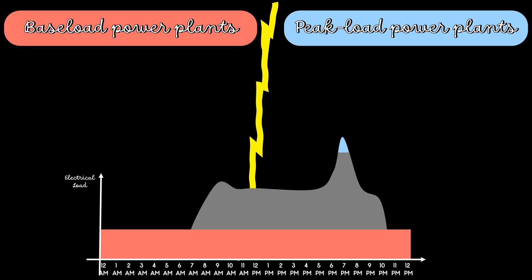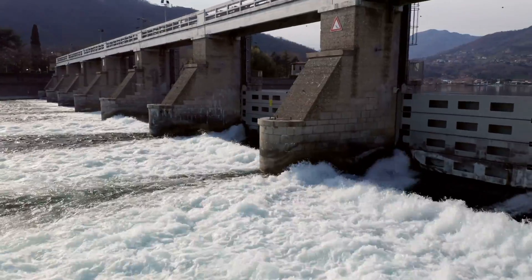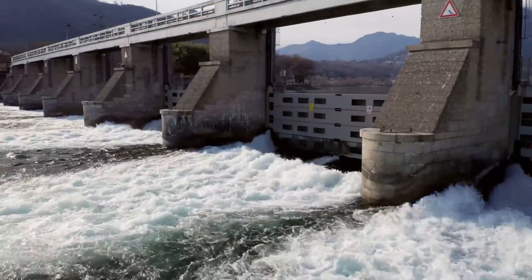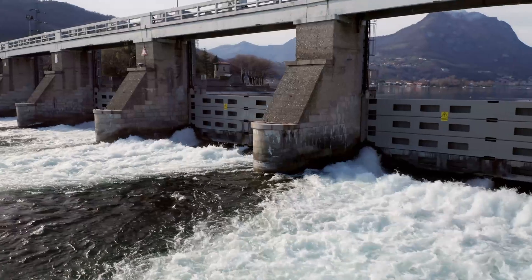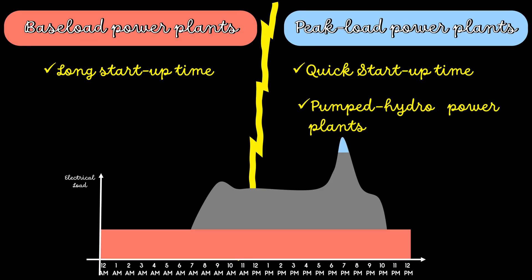One of the qualities expected from the peak load plant is that it should have a quick start-up time. The best thing about hydro power plants is that they can be started and brought to full power in less than 10 minutes. Pumped hydro power plants are the best solution for the peak load.